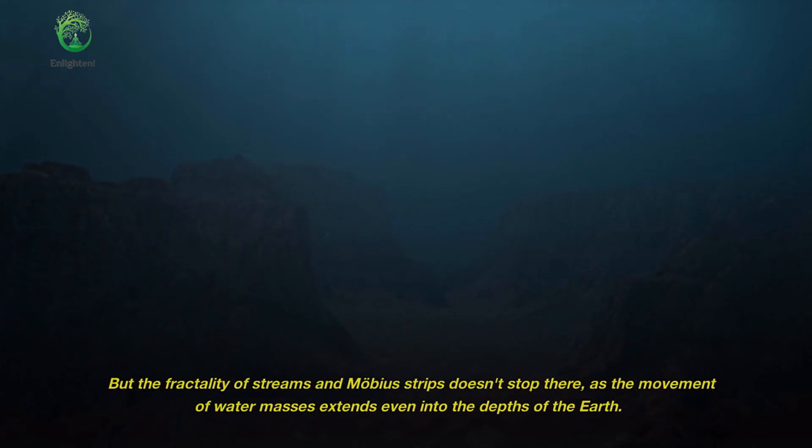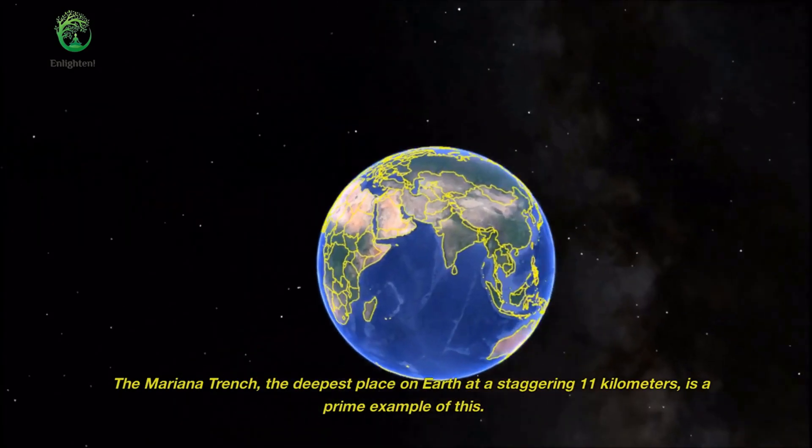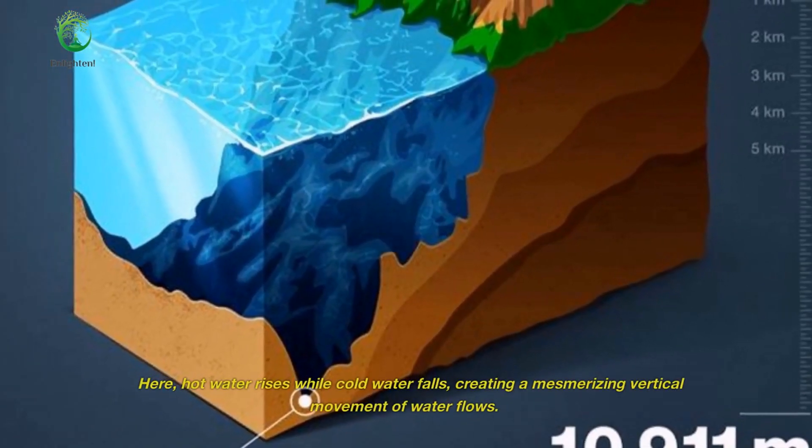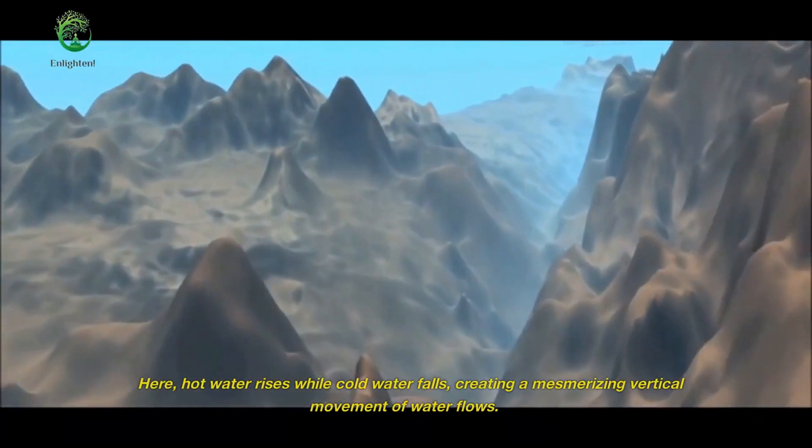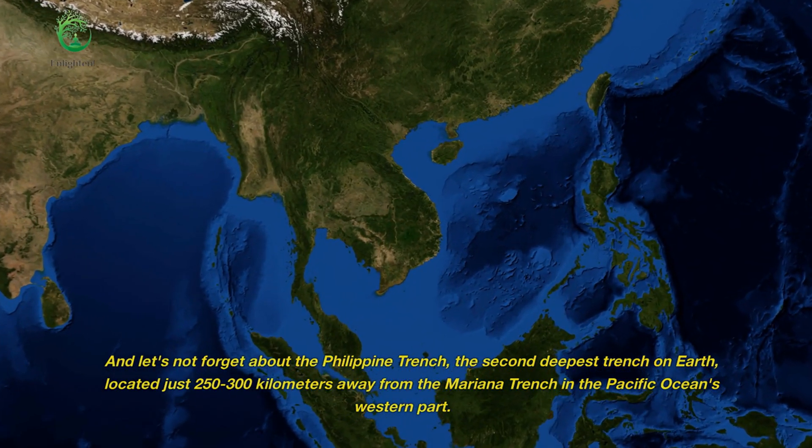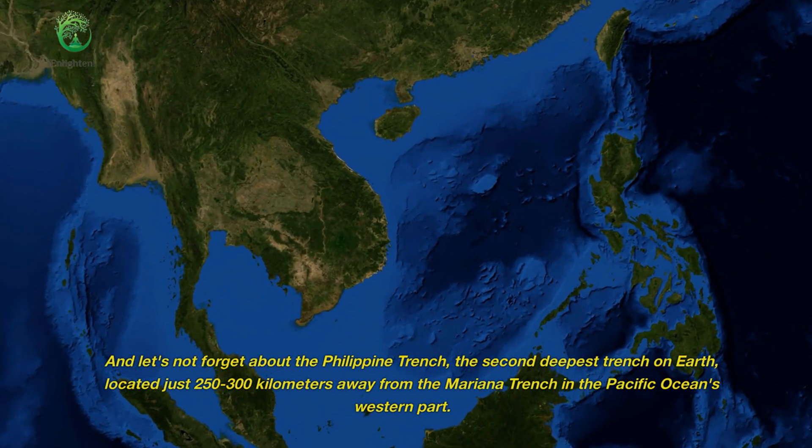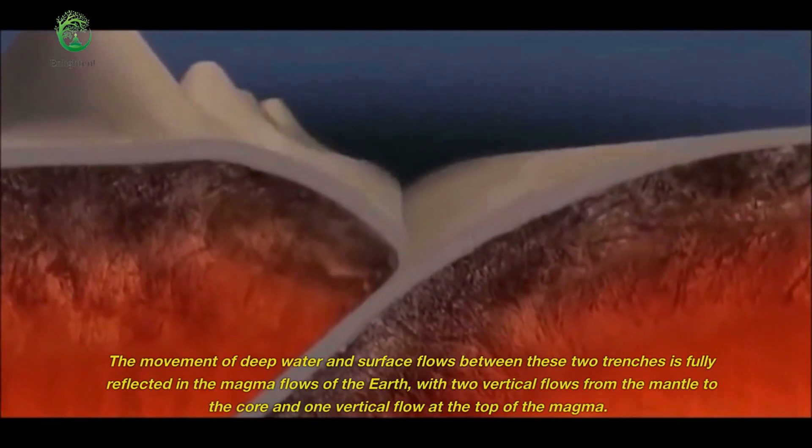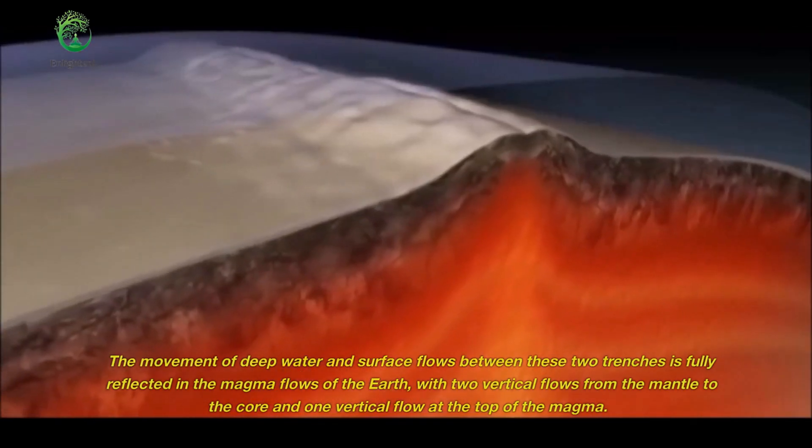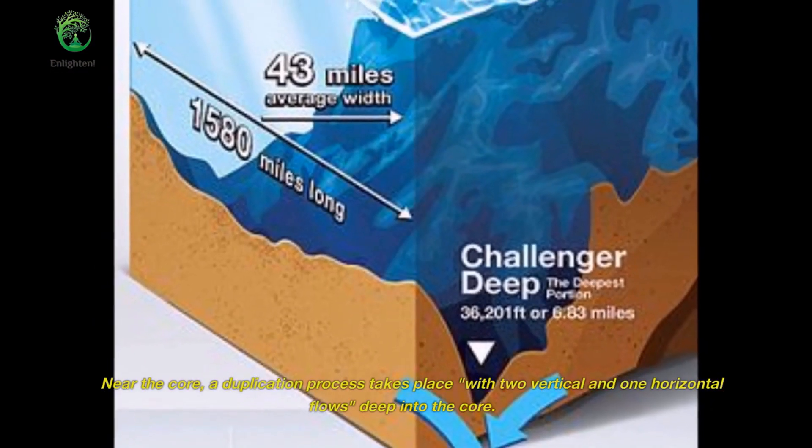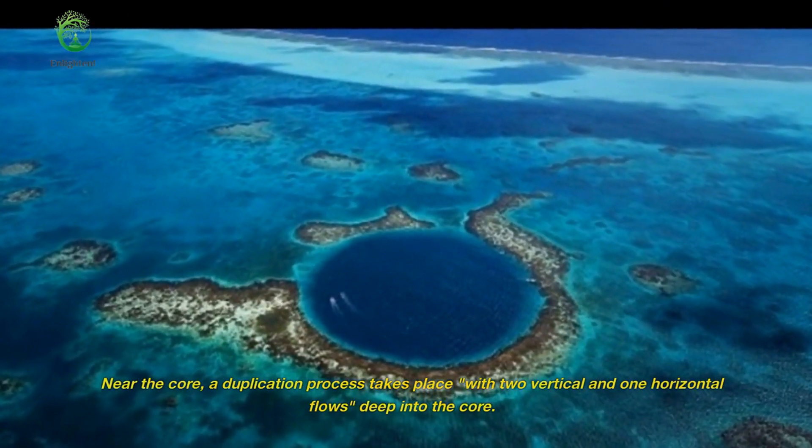But the fractality of streams and Mobius strips doesn't stop there, as the movement of water masses extends even into the depths of the Earth. The Mariana Trench, the deepest place on Earth at a staggering 11 kilometers, is a prime example of this. Here, hot water rises while cold water falls, creating a mesmerizing vertical movement of water flows. And let's not forget about the Philippine Trench, the second deepest trench on Earth, located just 250 to 300 kilometers away from the Mariana Trench in the Pacific Ocean's western part. The movement of deep water and surface flows between these two trenches is fully reflected in the magma flows of the Earth, with two vertical flows from the mantle to the core and one vertical flow at the top of the magma. Near the core, a duplication process takes place with two vertical and one horizontal flows deep into the core.